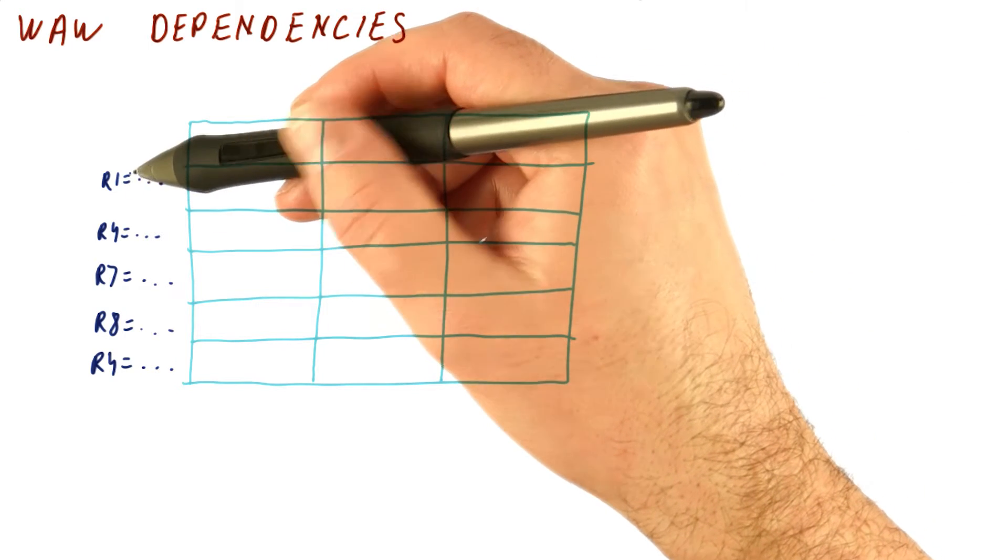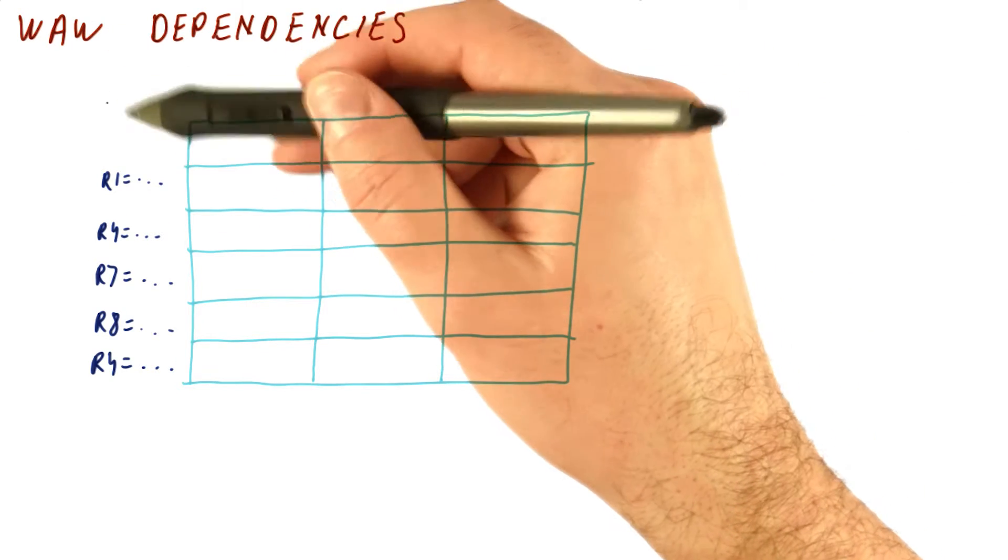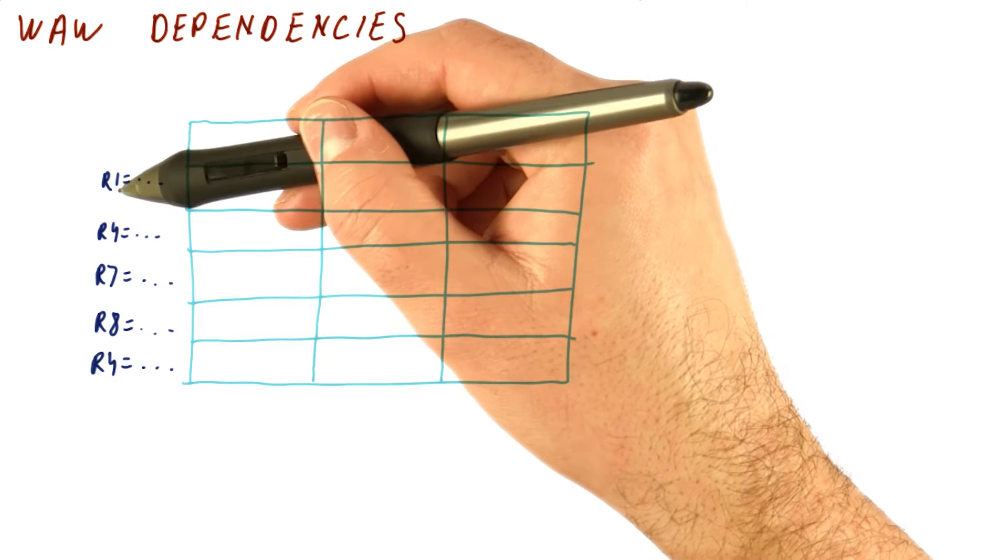So let's say that we have these five instructions. And for now, all that matters really for write-after-write dependencies is which registers are we writing to.